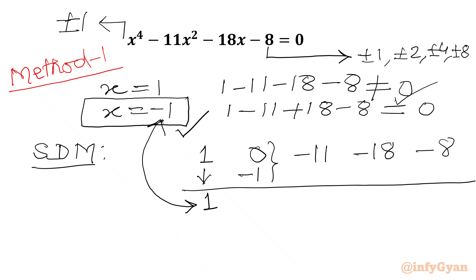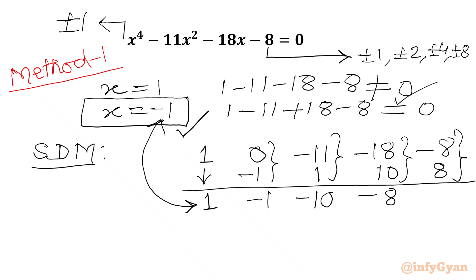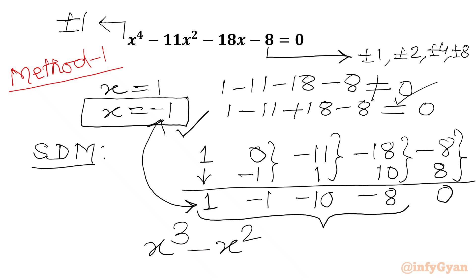Once we add these two we get -1. Again we multiply -1 with -1, we get +1. We add these two numbers and get -10. Then -1 times -10 is 10; after addition we get -8. Then -1 times -8 is 8; once we add these two numbers we get 0. So these are the coefficients for the cubic equation: x³ - x² - 10x - 8 = 0.